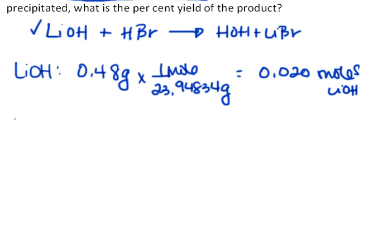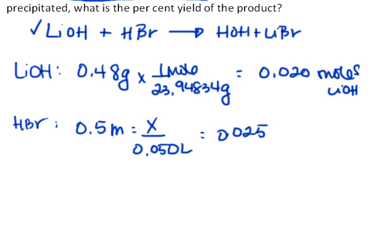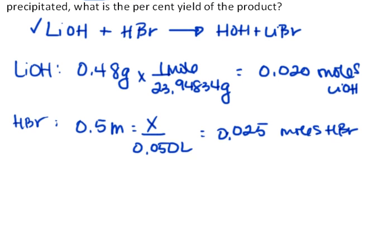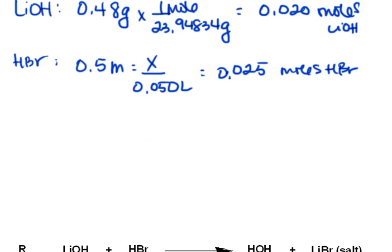For hydrobromic acid, we were given that we had 0.5 molar, and we had 50 milliliters of it, which is 0.050 liters. And so we have 0.025 moles of HBr. That's how much reactants we have.